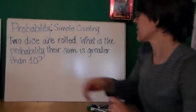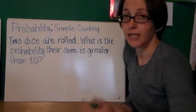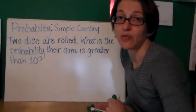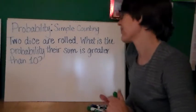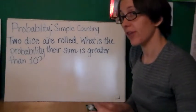Number of ways that the event could happen and the total number of outcomes in the denominator. So probability with some simple counting. Two dice are rolled. And just for the sake of argument, let's say one is red and one is blue.